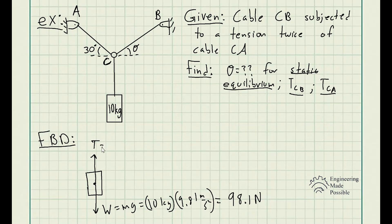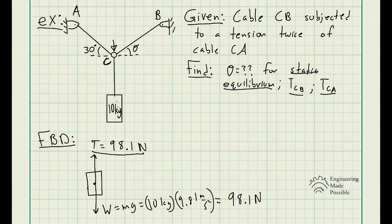We know this tension has the same force equal and opposite to that weight for static equilibrium, so we know the tension in the lower cable is 98.1 newtons. FBD stands for free body diagram. We needed this tension because, since we're dealing with cables CA and CB, we need to know what force is acting downwards along the ring. Now we're going to do a free body diagram on the ring and draw the forces applied to it.